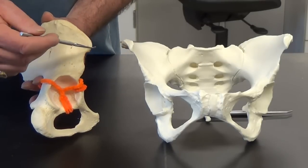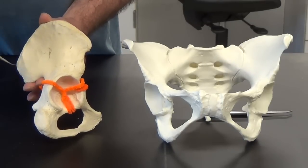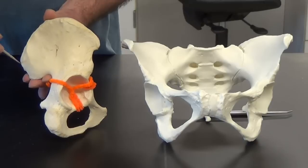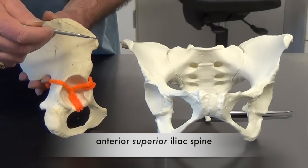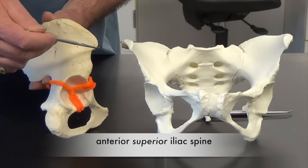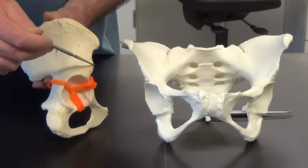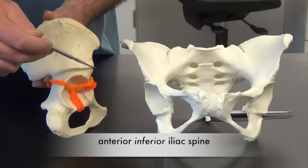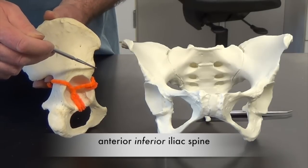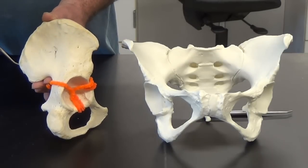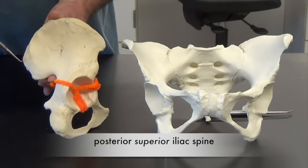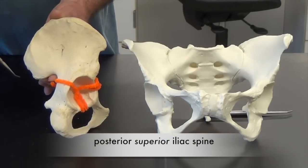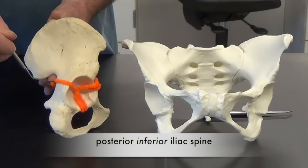Remember that this is the anterior and this is the posterior. Here we have the anterior superior iliac spine, and just beneath it we have the anterior inferior iliac spine. At the posterior, we have the posterior superior iliac spine and the posterior inferior iliac spine.